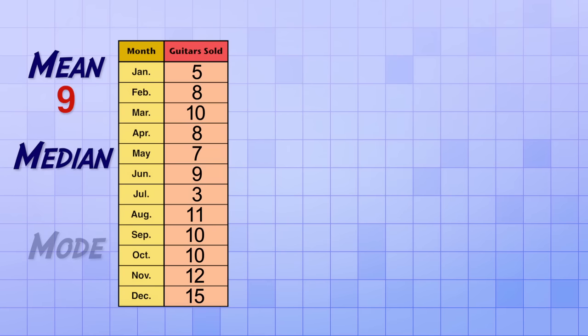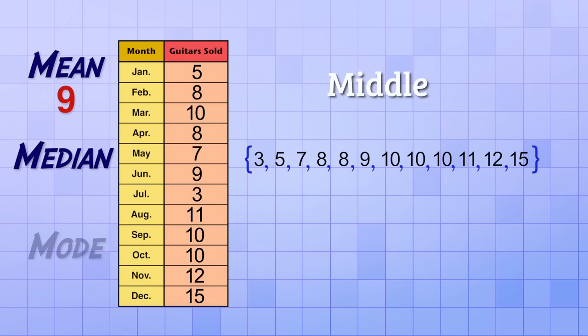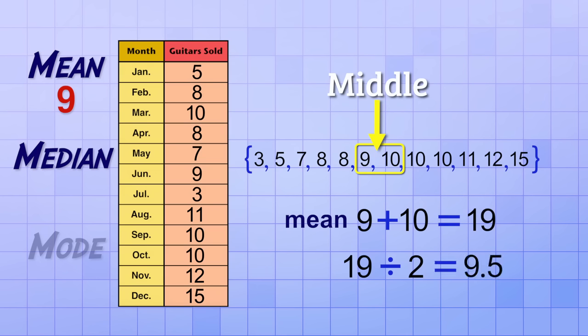Next, to find the median of the dataset, we're going to have to rearrange the 12 data points in order from smallest to largest so we can figure out what the middle value is. There, that's better. Since there's an even number of members in this set, we can't just choose the middle number. So we're going to have to pick the middle two numbers and then find the mean of them. 9 and 10 are in the middle since there's an equal number of data values on either side of them. So we need to take the mean of 9 and 10. That's easy. 9 plus 10 equals 19, and then 19 divided by 2 is 9.5. So the median number of guitars sold is 9.5. That means that in half of the months, he sold more than 9.5, and in half of the months, he sold less than 9.5.